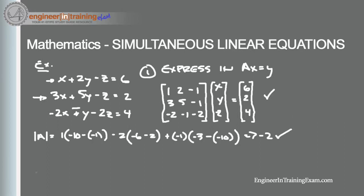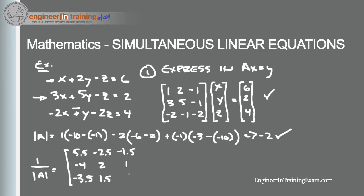Calculating that out, the determinant equals negative 2, so it does exist, which means there is an inverse. The inverse of matrix A is: row one [5.5, -2.5, -1.5], row two [-4, 2, 1], row three [-3.5, 1.5, 0.5].